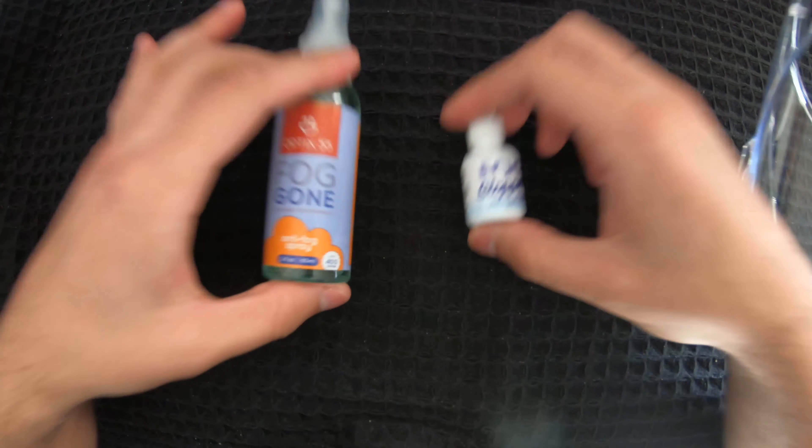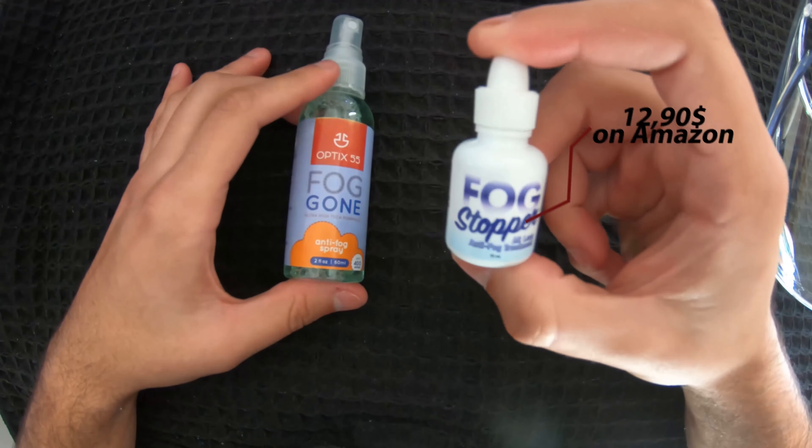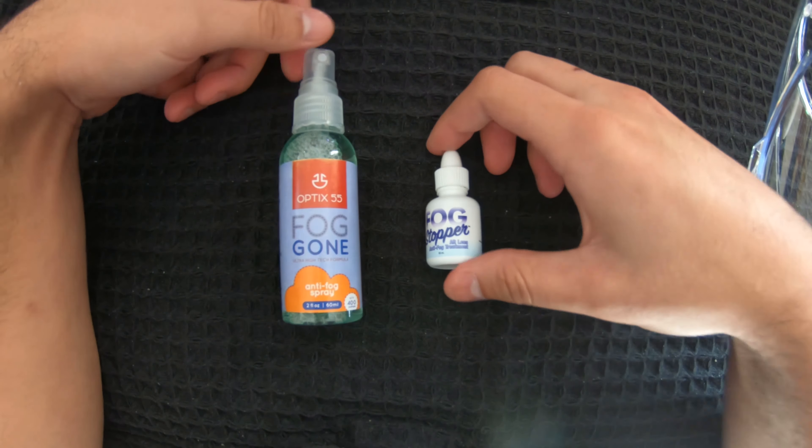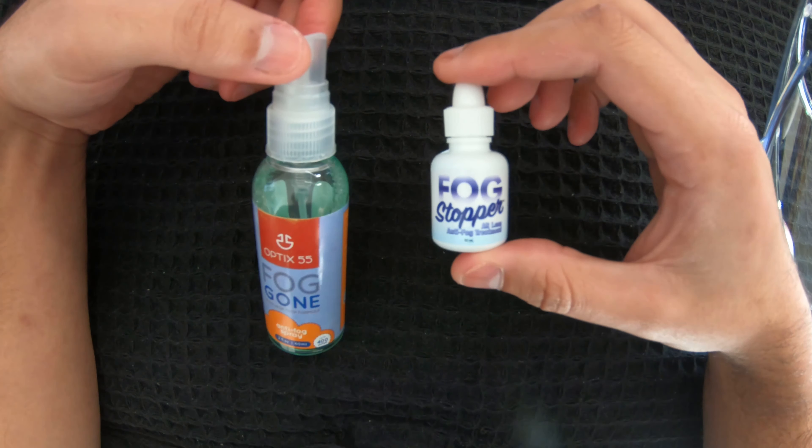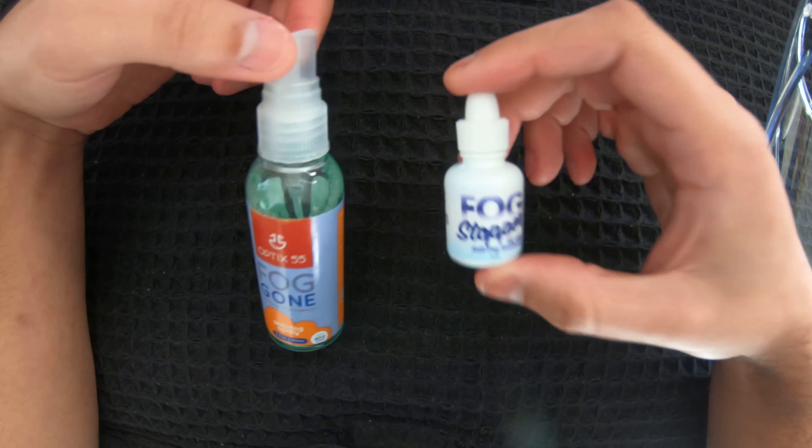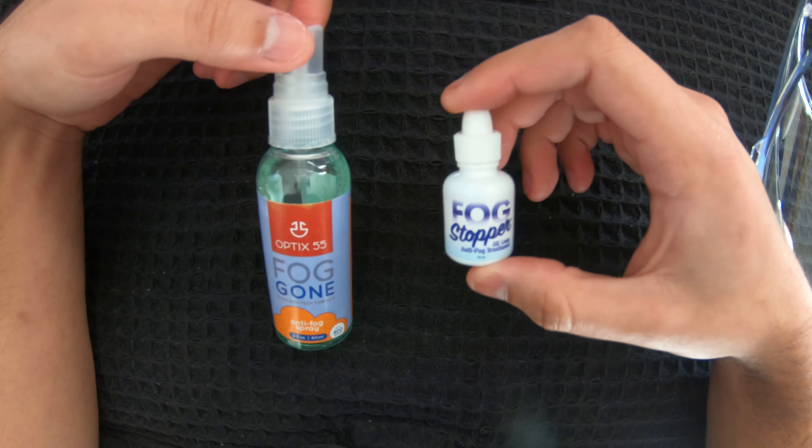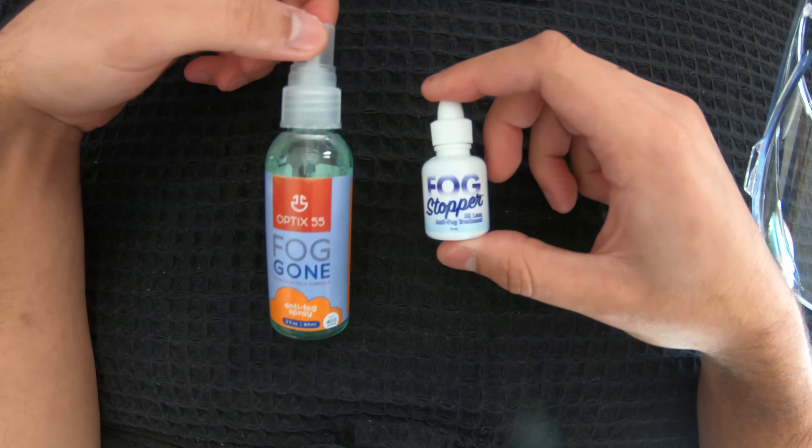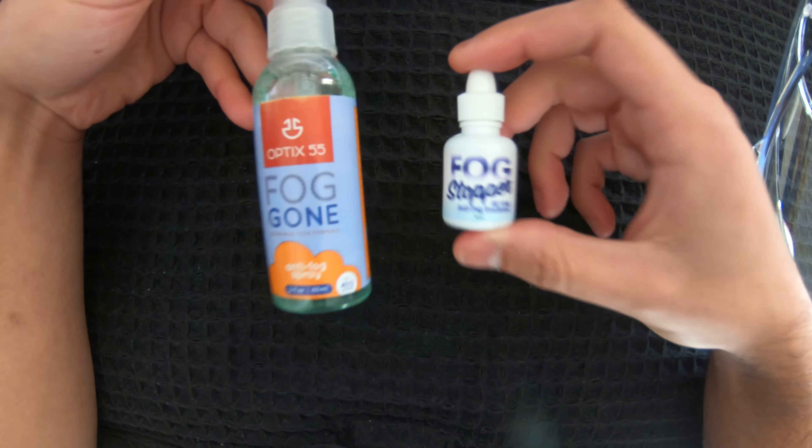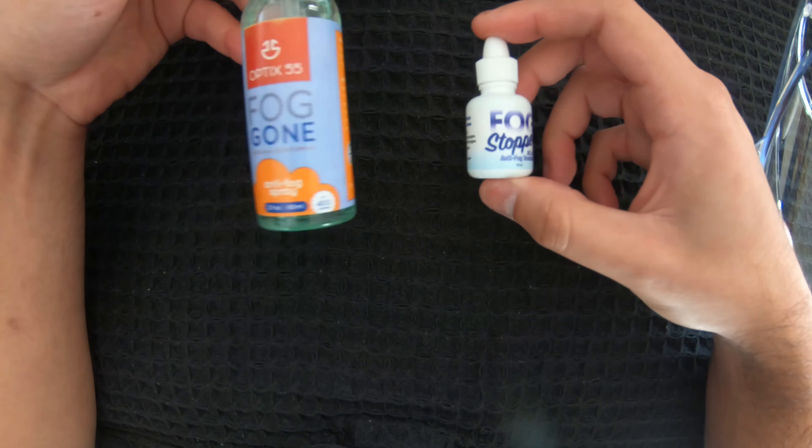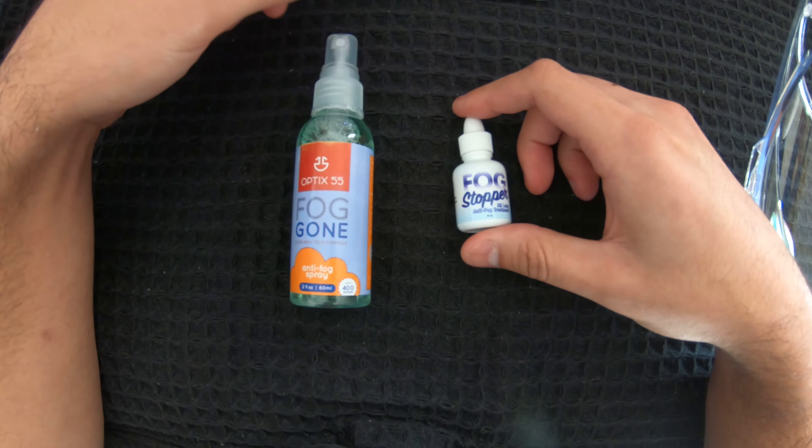And so, I bought two different types of products: I have Fog Stopper as well as Fog Gone. I'm going to talk through each of these products, how to apply them, and how they can help deal with fogging on your glasses as well as your visor. This is not a sponsored video. I bought both of these products myself, and I'm a fan of one of these and not so much the other.